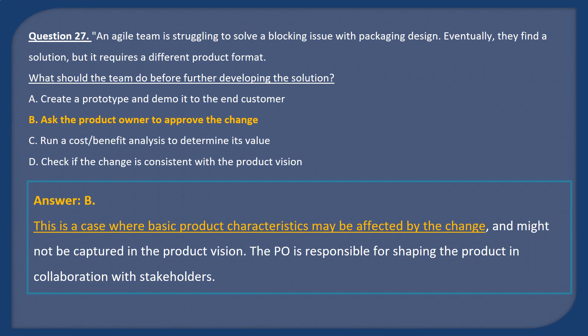Answer B. This is a case where basic product characteristics may be affected by the change and might not be captured in the product vision. The product owner is responsible for shaping the product in collaboration with stakeholders.